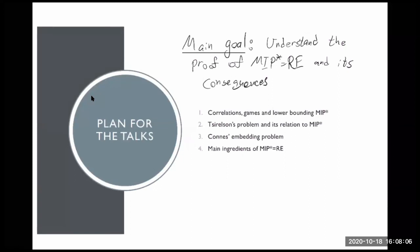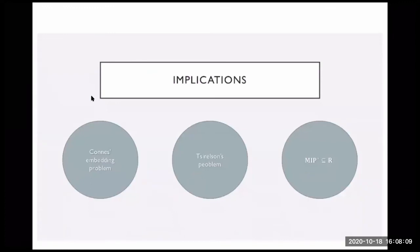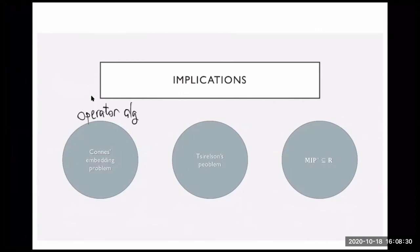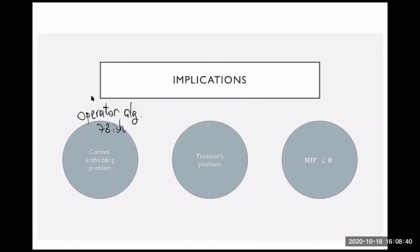Let's talk about the three problems. First, there's Connes' embedding problem, which is a problem in operator algebras — functional analysis from about 1978 — which discusses the way of approximating algebras using finite dimensional matrices. So it's a question about approximating an algebraic structure using finite matrices.